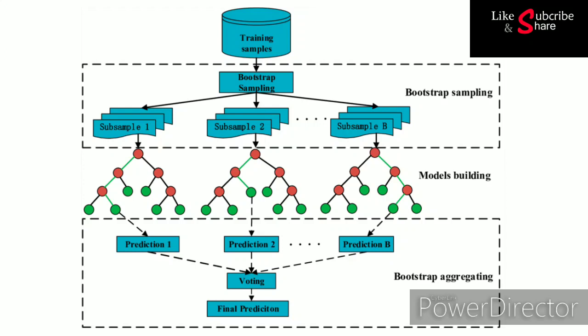So in bagging, we use the same algorithm like decision tree, but we use a number of them — like 20 or 40 decision trees — and each of these decision trees is trained on a different sample of the same training dataset, with different variations of the training data.